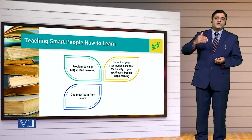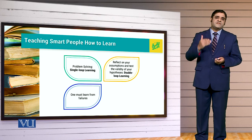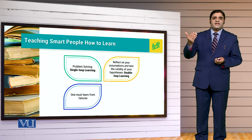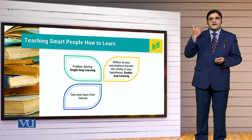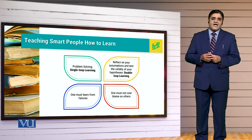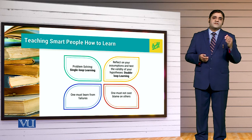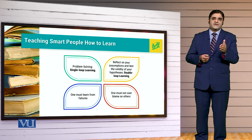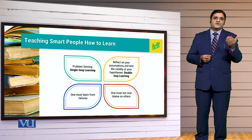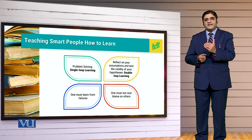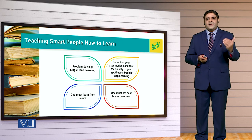People learn through mistakes, and those mistakes that they learn long-term result in a permanent change in behavior. At the same time, one must not come up with the blame game, because blame doesn't bring any benefit. We have to go to solutions. We have to identify the root of the problem rather than engage in the blame game.